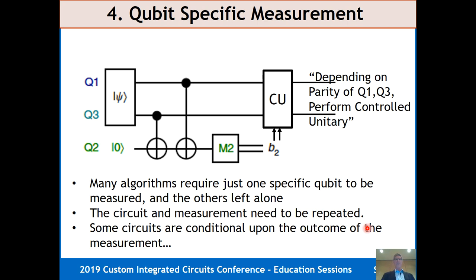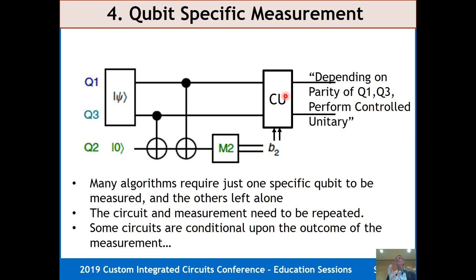Why do we have to do qubit-specific measurements? Take three qubits — you can ask whether qubit 1 and qubit 3 have the same parity. You ask this with two CNOTs on a helper qubit called an ancilla. If you want to do a conditional operation — measure the parity and then change the state conditionally — you can't measure qubit 1 and qubit 3 directly because it destroys the state. So you use the ancilla to get parity information, then do a controlled unitary. This is important for error correction.